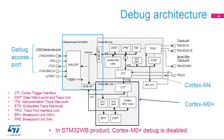Debug Access Infrastructure includes the debug port, SWJDP, and access ports (AP), which allow access by an external debugger to the target's trace and debug features. The Cortex-M0 Plus core includes the processor and associated trace and debug units: DWT, BPU, and CTI.